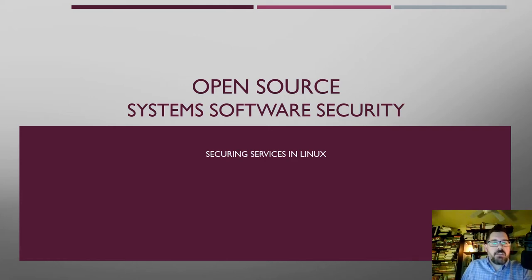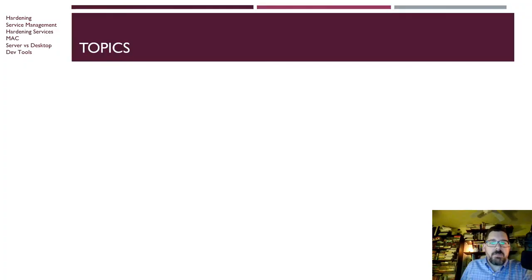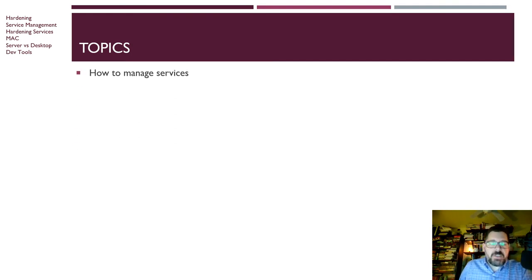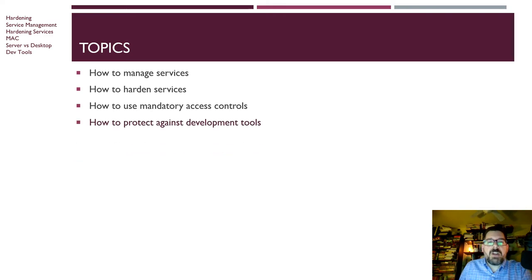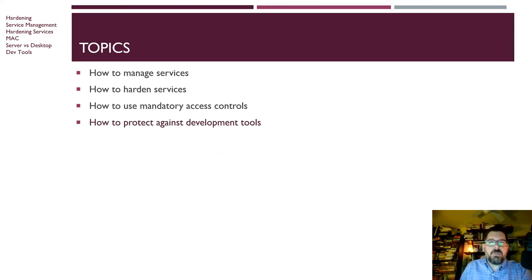This week we're going to talk about securing services with Linux. Our topics will be how to manage services — we've talked about that a little bit already, so we'll review that. Then we're going to talk about how to harden services, how to use mandatory access controls like SELinux and AppArmor, and finally we'll talk a little bit about development tools, which is not so much of a concern as it used to be.